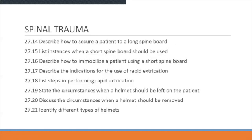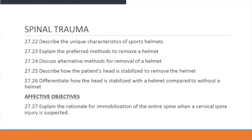Students should describe how to secure a patient to a long spine board, list instances where a short board should be used, describe how to immobilize patients using a short spine board, describe the indications for rapid extrication, list the steps in performing a rapid extrication, state the circumstances when a helmet should be left on or removed, identify differences in types of helmets, describe unique characteristics of sports helmets, explain preferred and alternative methods for removing a helmet, and describe how a patient's head is stabilized with and without a helmet.